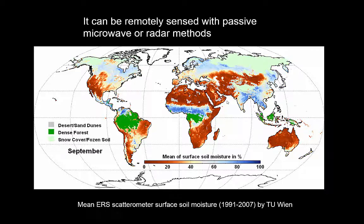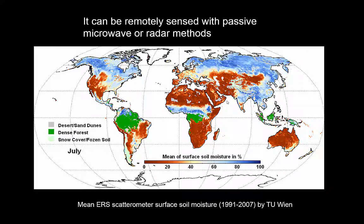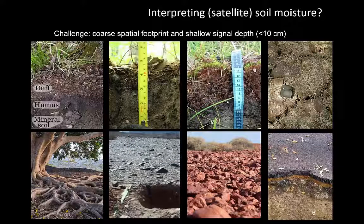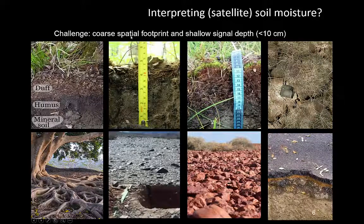These are quite shallow measurements — something to keep in mind. We're really only looking at the skin of the onion, if you like, of your surface. When you think about what the satellite is measuring, you have to take into account that there might be things like duff or litter layers on top of the soil. The depth of measurement of radar and passive microwave techniques is similar to the wavelength — so that's going to be in the order of centimeters. For L-band, maybe 10 or 20 centimeters, but for shorter microwave frequencies it may only be one or two centimeters.